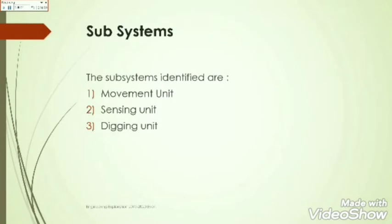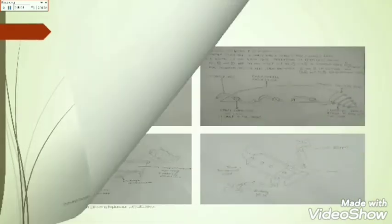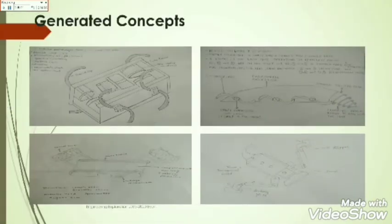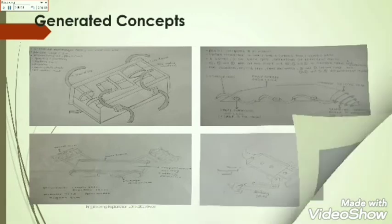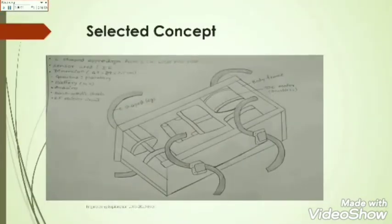The subsystems that we identified were movement unit, sensing unit and digging unit. We came up with 4 different design concepts for our need statement. All these design concepts were unique in their own sense. After careful analysis of the pros and cons using the Pugh chart, we selected design 1. This model uses 4 C-shaped flex for locomotion and 4 DC motors to drive it. It also uses an IR sensor to sense obstacles. This model was also lightweight and durable.